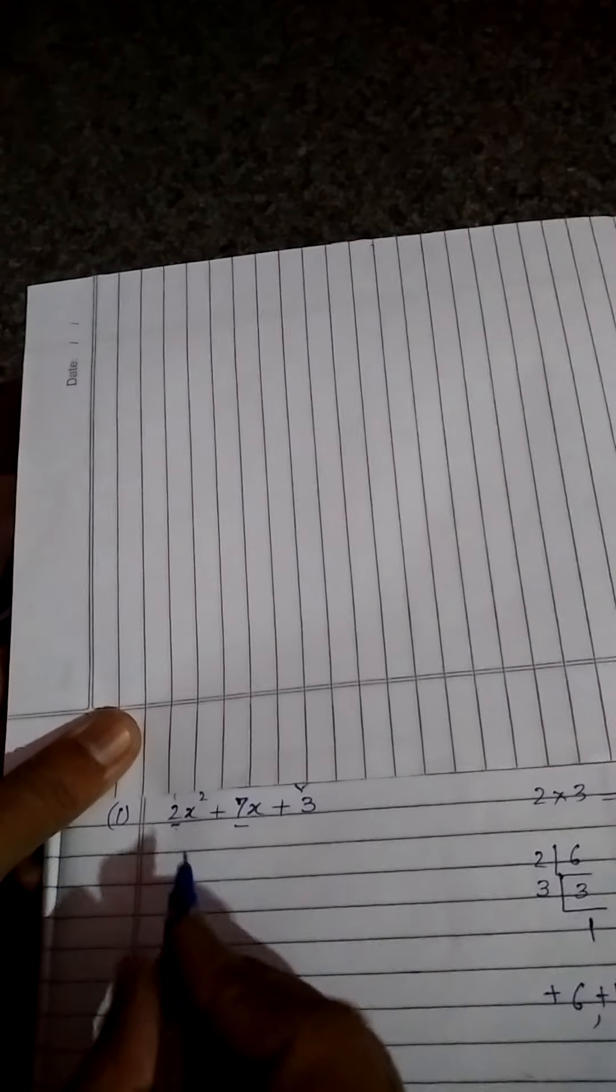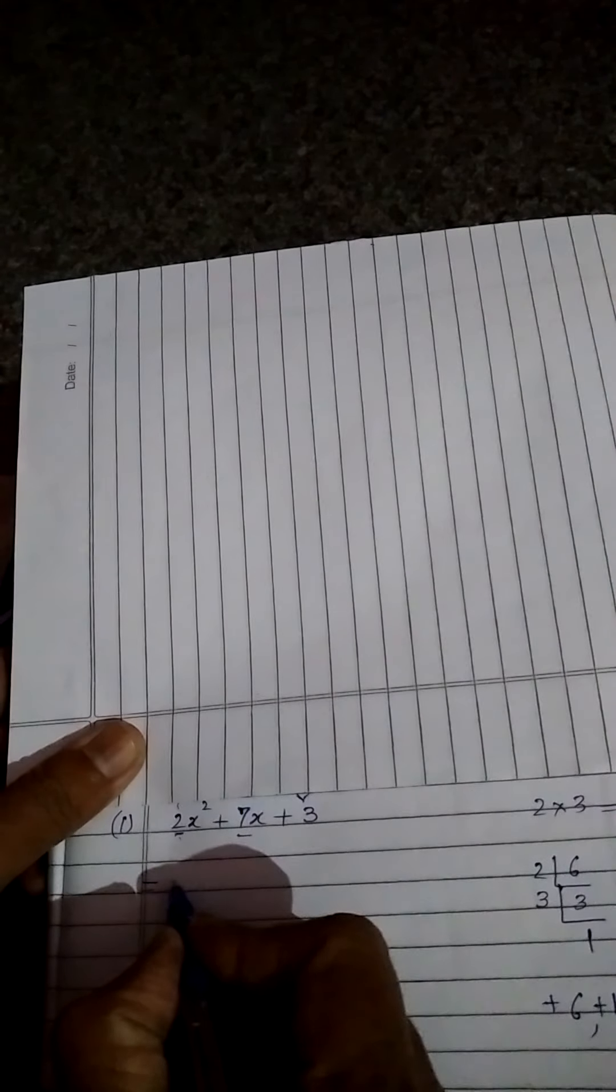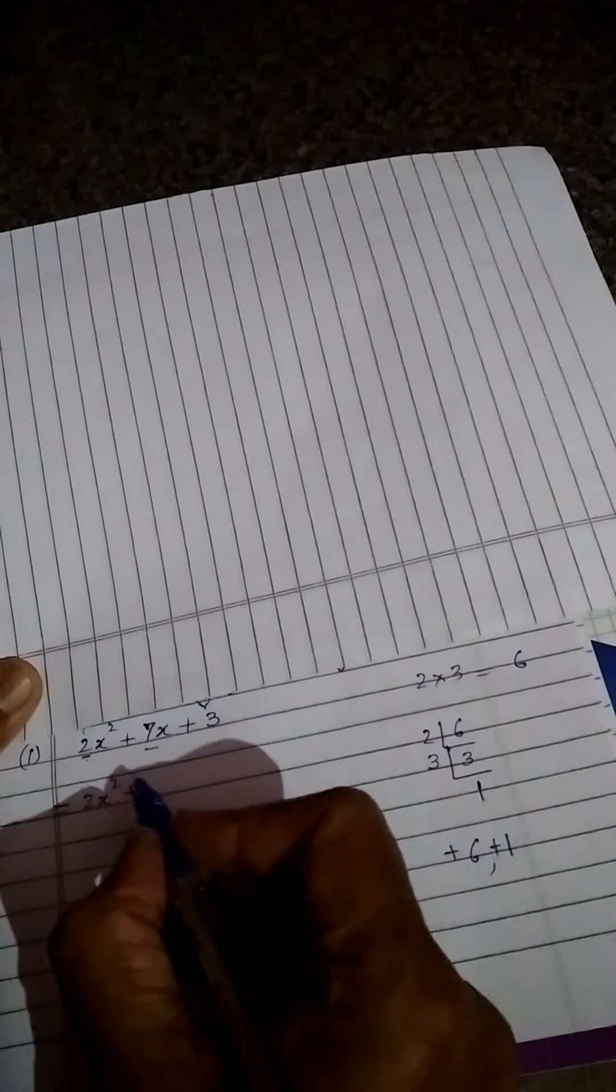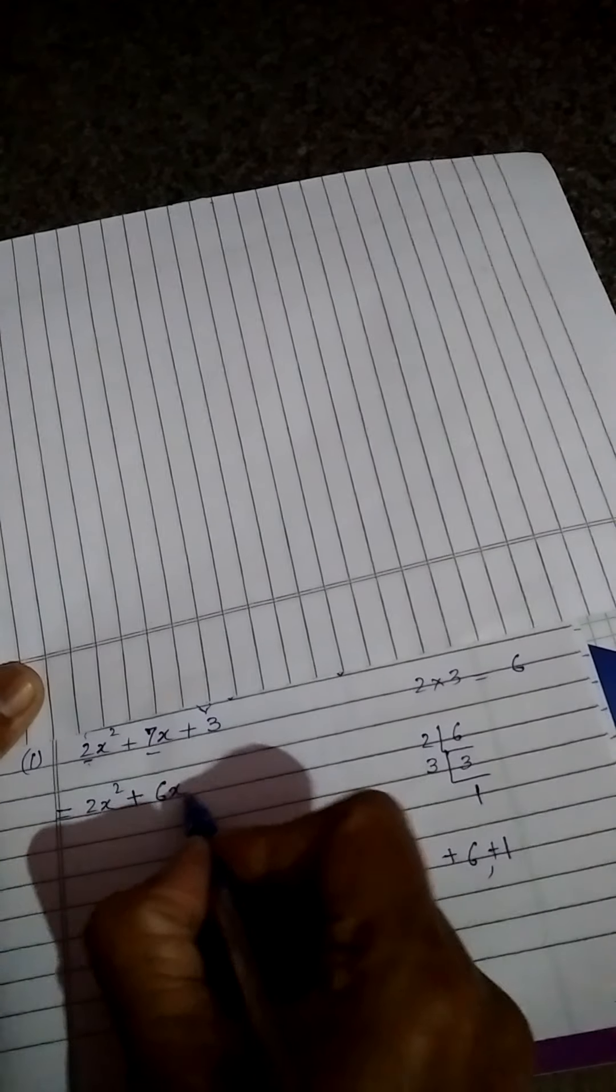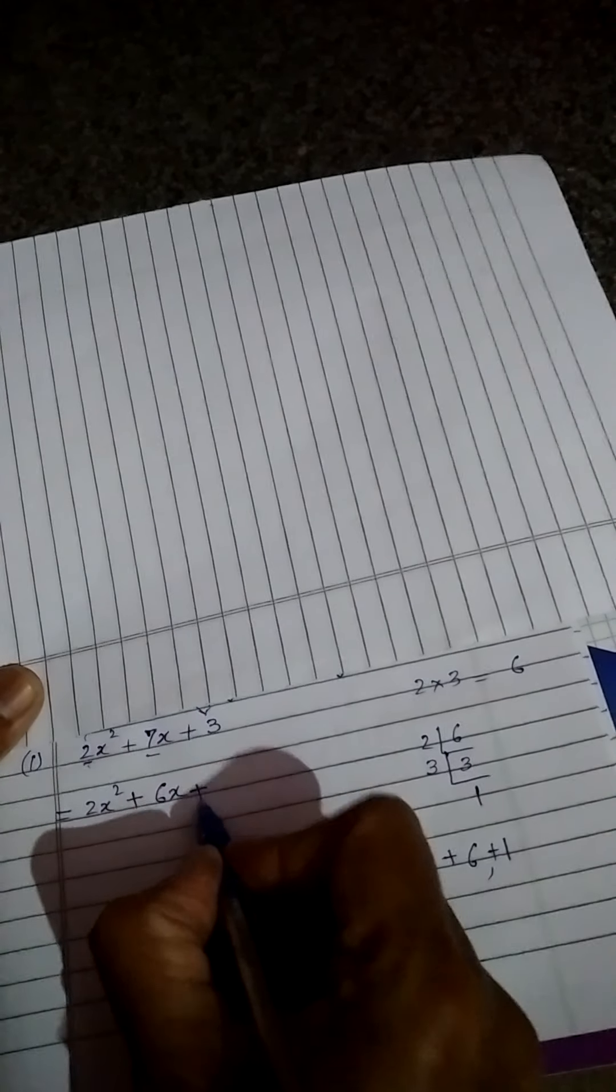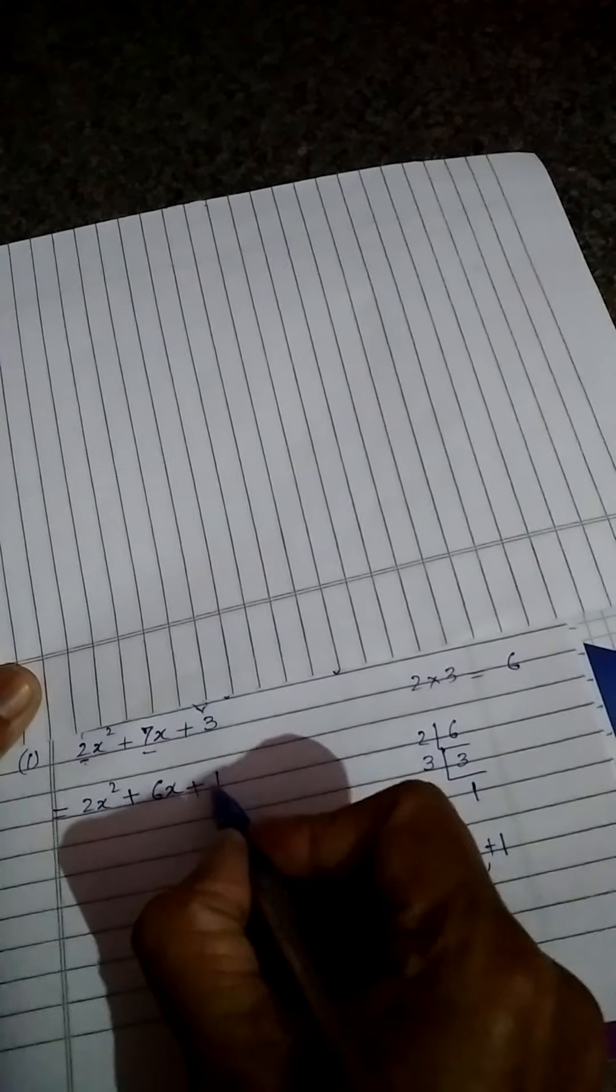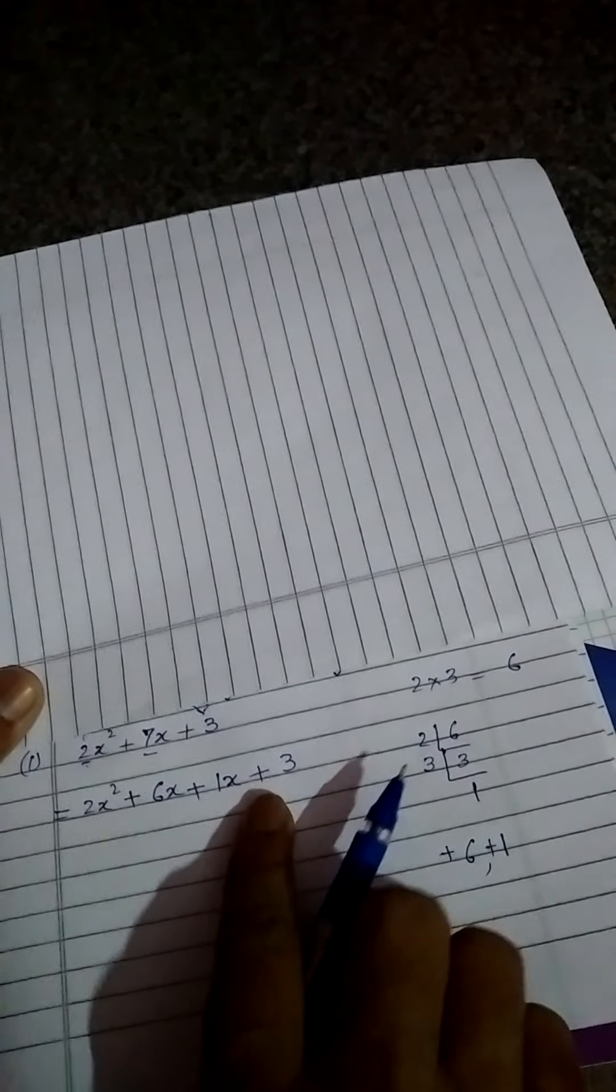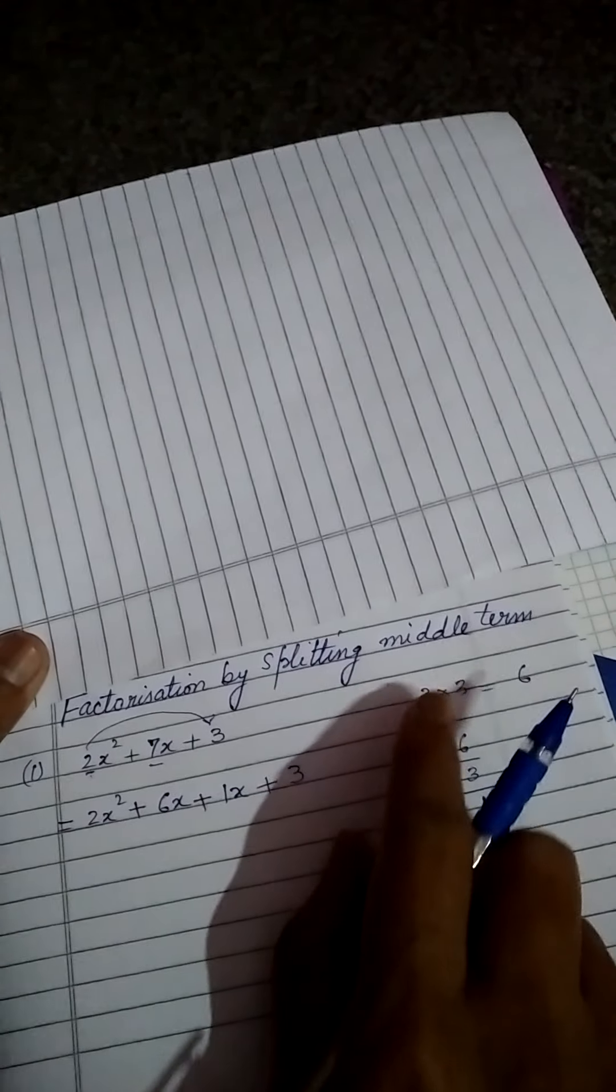So here we will write like this now. It will be written 2x square. Then what I said, both factors will be positive. So it will be written 6x. This x will come with it plus this 1 and this x will come with it also. And this 3. So because this term is splitted in two parts, that's why it is called splitting middle term.